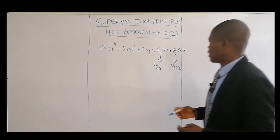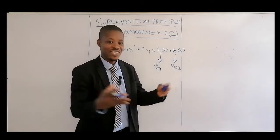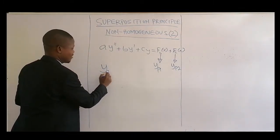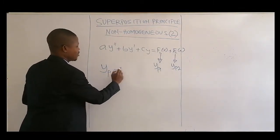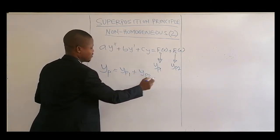So then you will now superpose. Superposition in the sense that you add the effect together, you add the particular. So the YP now will now become YP1 plus YP2.